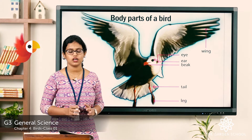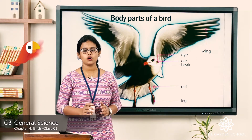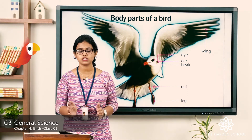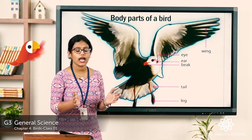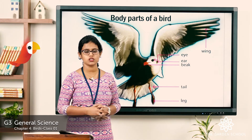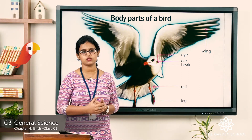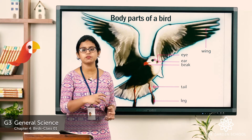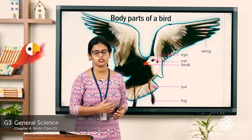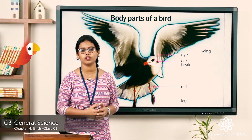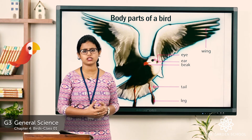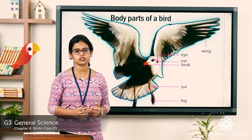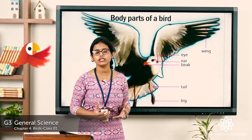Birds have no teeth, but they have a beak. Do all birds have the same type of beak? No. It all depends on the food they eat. Parrots eat fruits and nuts, so their beaks are shaped according to their eating habit. What about the eagle? Eagles feed on the flesh of other animals, so likewise their beaks are shaped according to their feeding habit. Different birds have different kinds of beak.